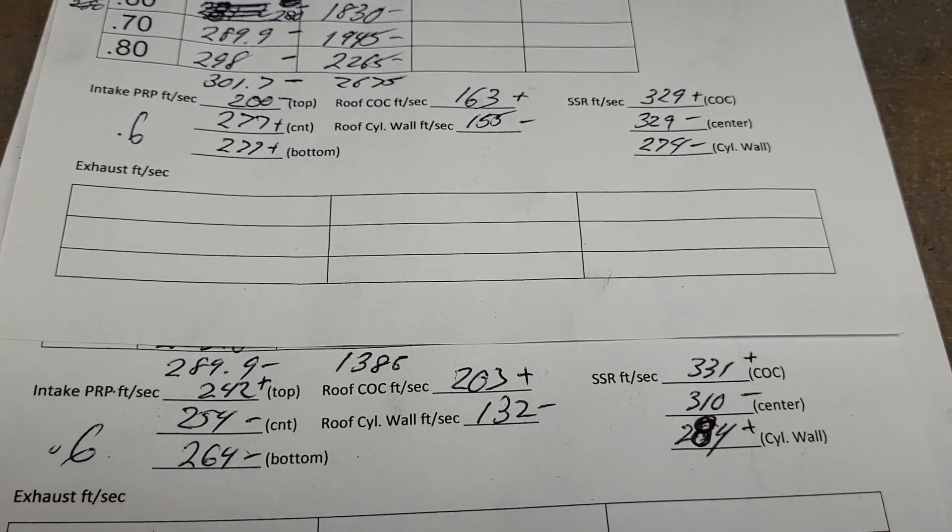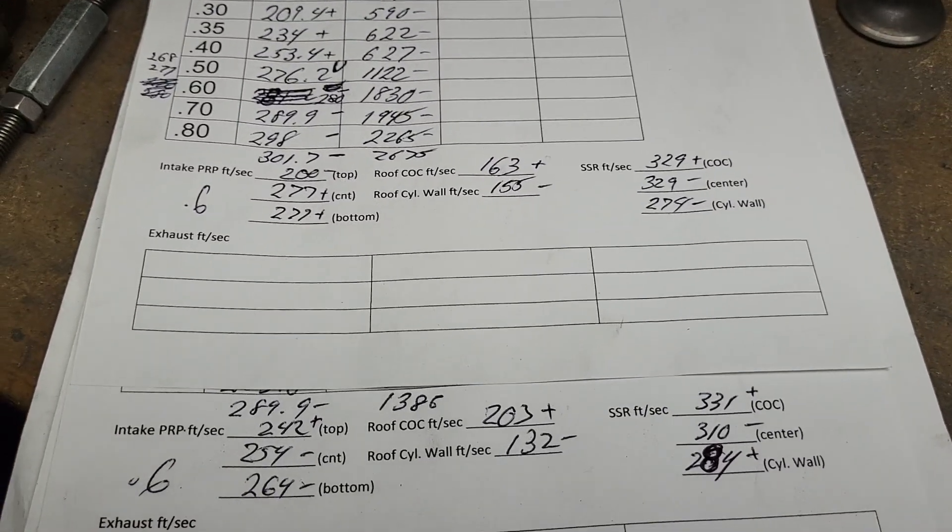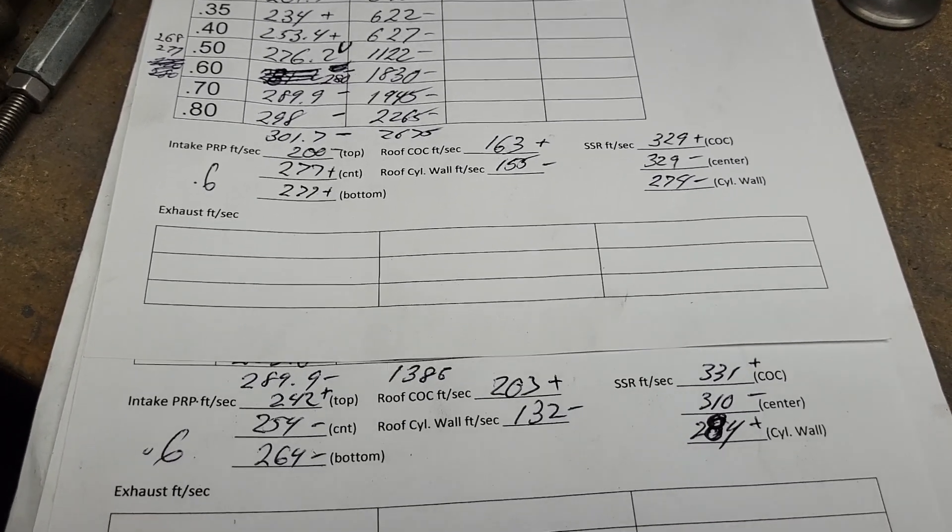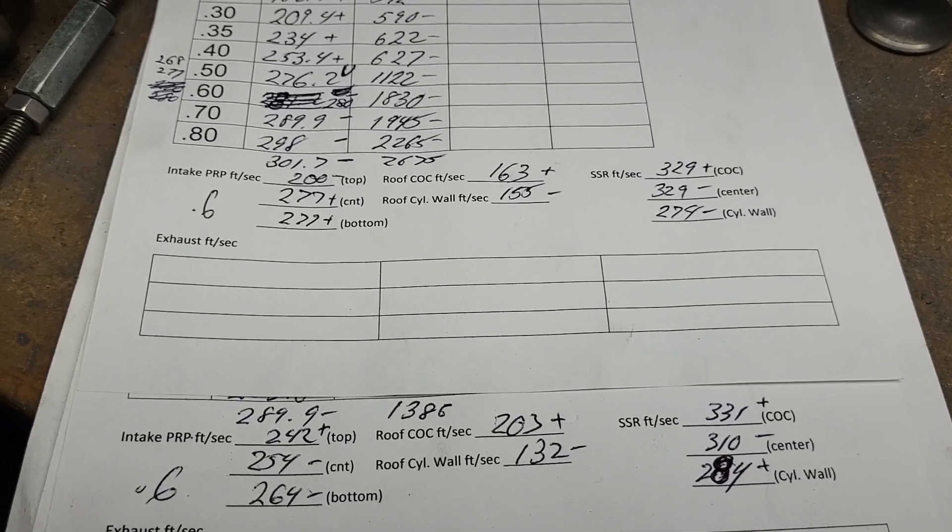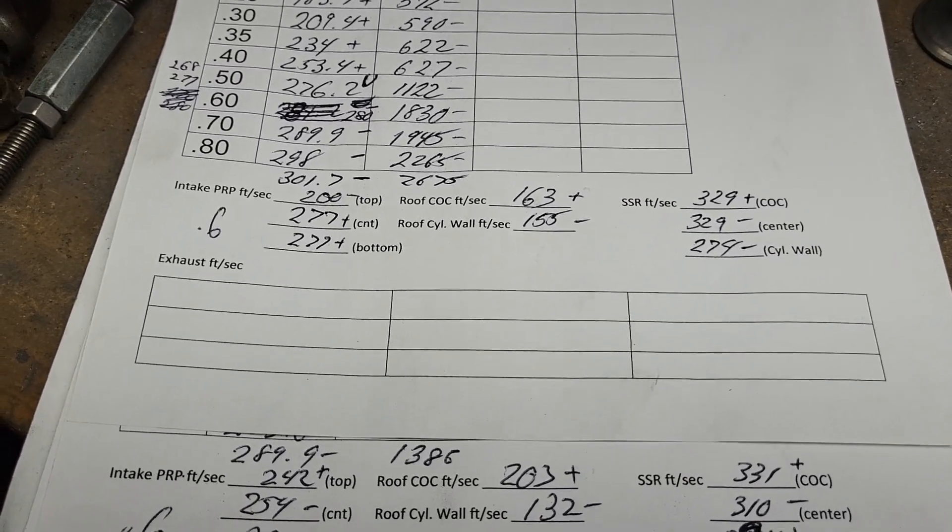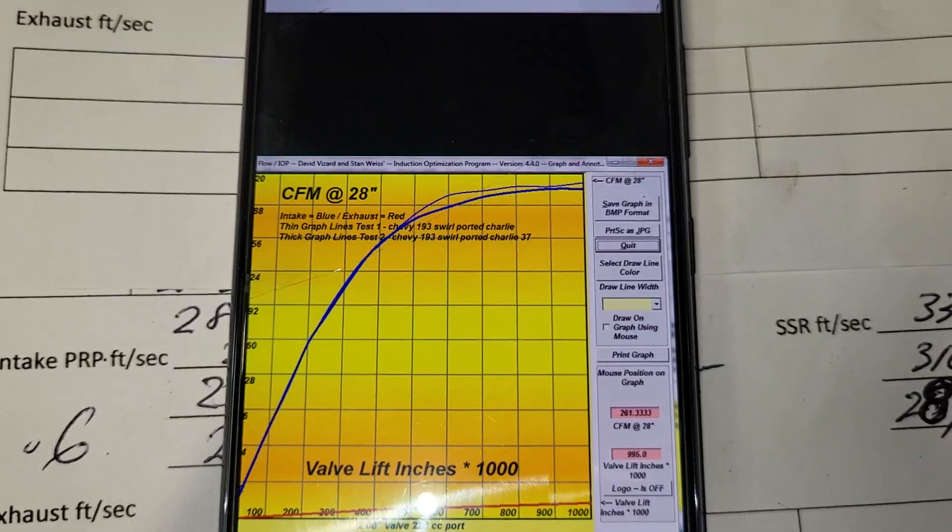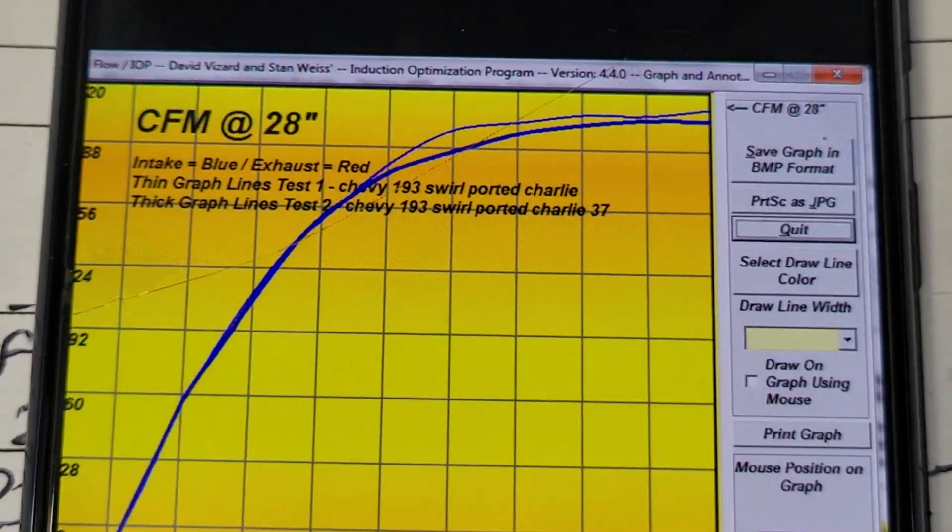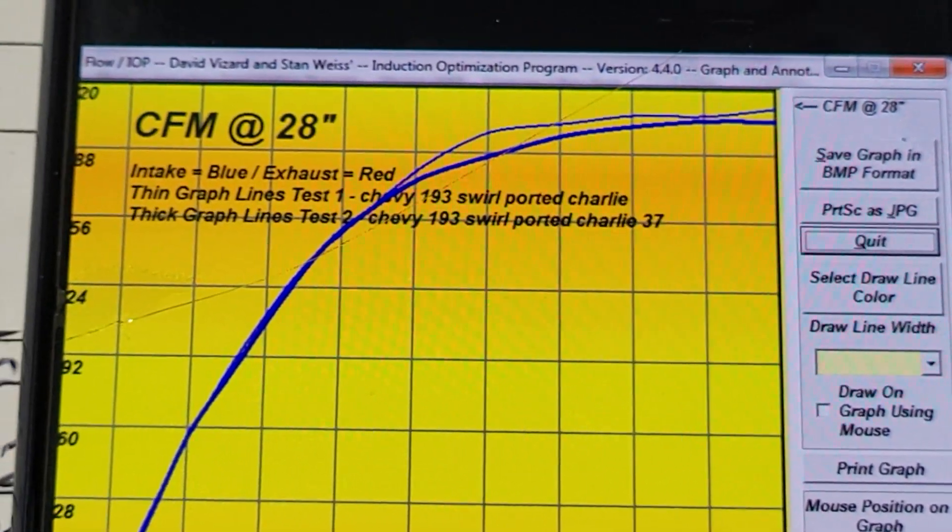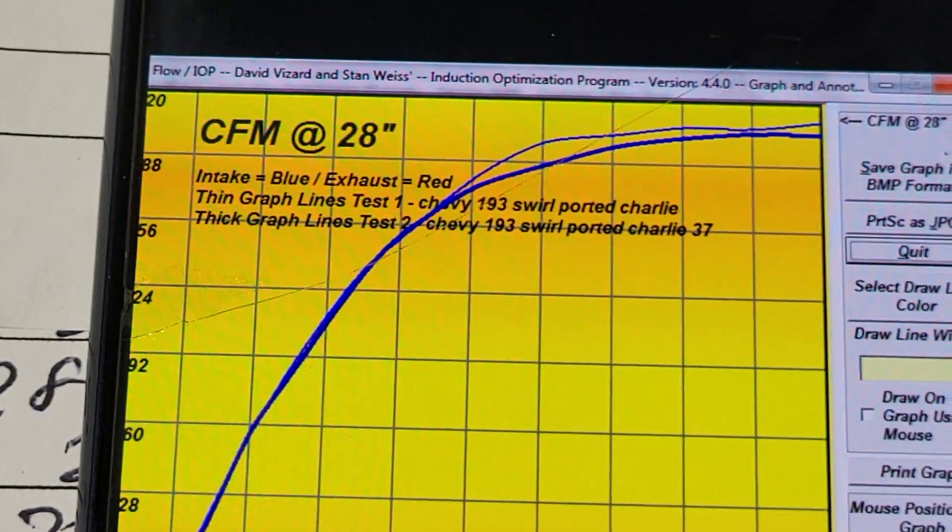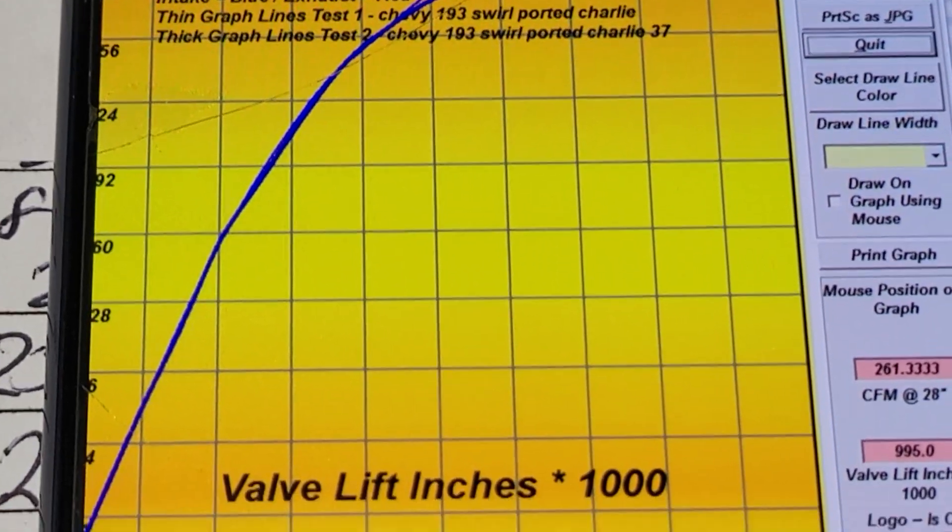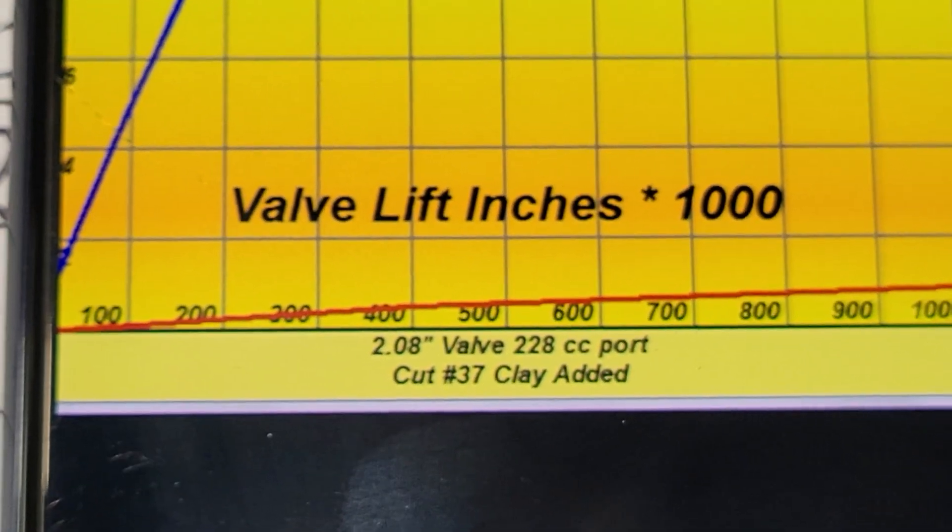Before I forget, it's awesome because Stan Weiss watches obviously and he'll take some of the info that we do on this and he'll do a bunch of calculations and run them through his programs and he'll just send me the information because he's interested and he's a great guy. Let me grab my other phone and pull up a couple of pictures and I'll explain it. See if I can blow this up. Obviously I'm taking it off one phone and recording it with the other phone. So thin graph lines Chevy swirl ported, Charlie thick graph lines 37.